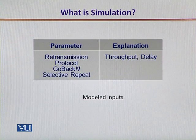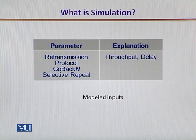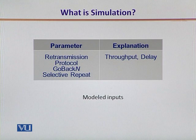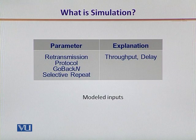The retransmission protocol necessitates that either of two strategies — such as automatic repeat request, go-back-N, or selective repeat — are triggered. These two will have a direct impact on the overall throughput, resulting goodput, and the latency.